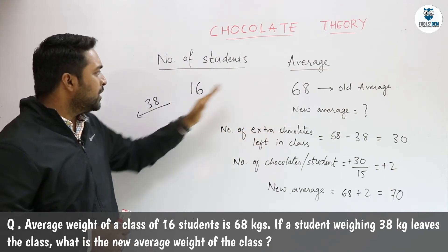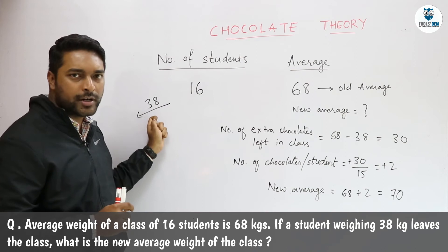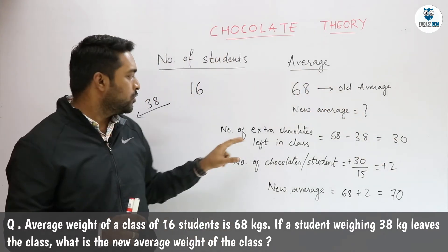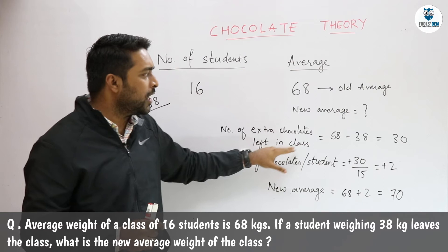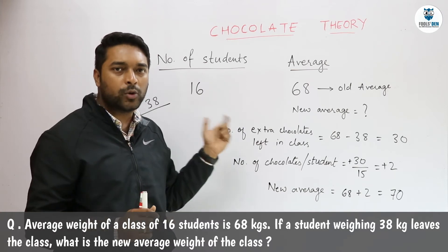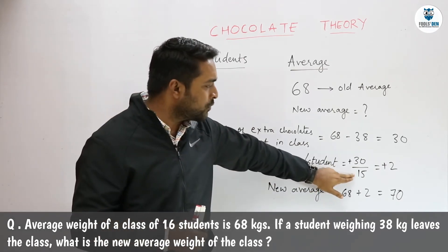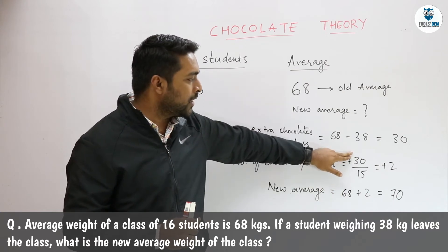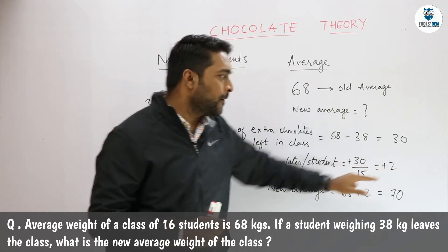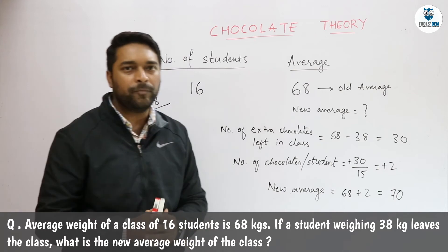When this student was part of the class, he had 68 chocolates. But he is leaving with only 38 chocolates, meaning he leaves 68 minus 38, that is 30 chocolates, in the class. These 30 extra chocolates will be equally distributed among the remaining students. Earlier there were 16 students; one has left, so 15 remain. So 30 chocolates divided among 15 students gives 2 each. Earlier they had 68 chocolates; now they get 2 more, so the new average is 70.